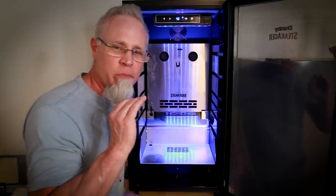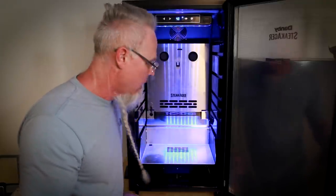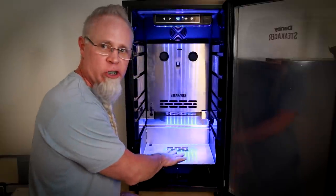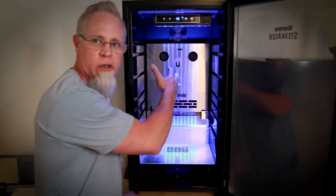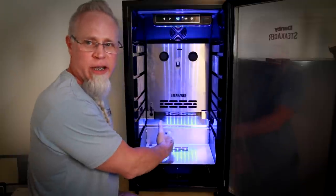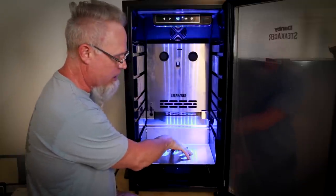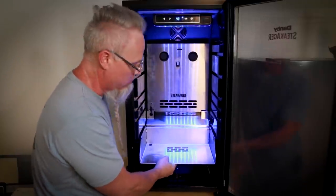And this right here is your shelf. This is where your subprimal cuts will sit in the rack. It'll sit on top of this, and of course this is removable as well.